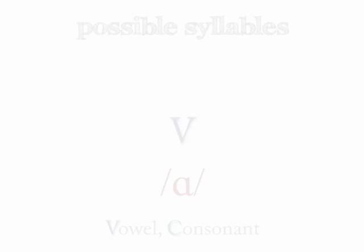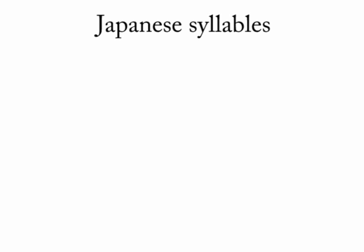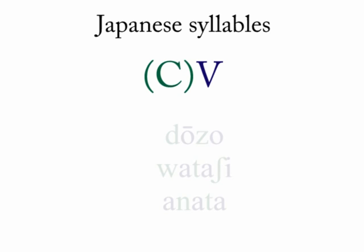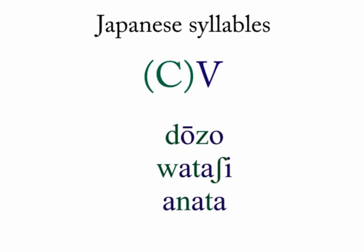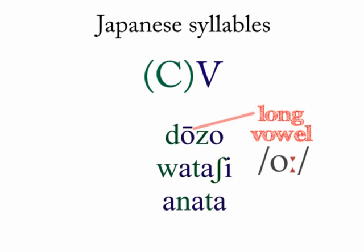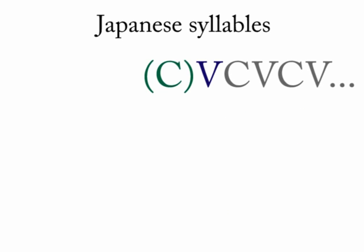Languages have different ways of building a syllable. For instance, in Japanese you'll tend to hear syllables that end in a vowel — syllables don't have consonants after the nucleus. These open syllables have just a vowel or a consonant plus a vowel. The vowel can be long or short, but you'll still stop there, so the next consonant would be part of the following syllable.